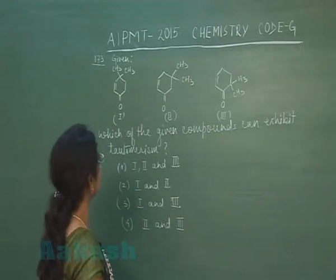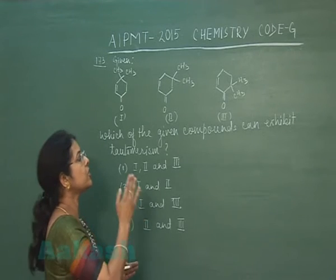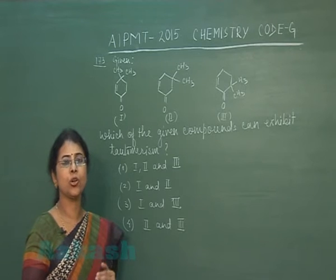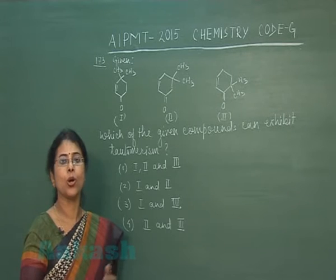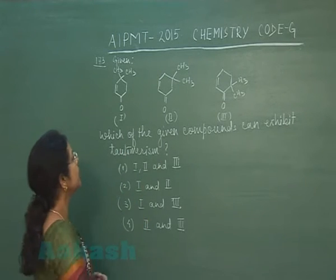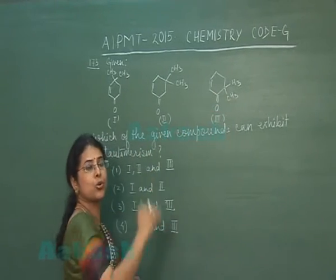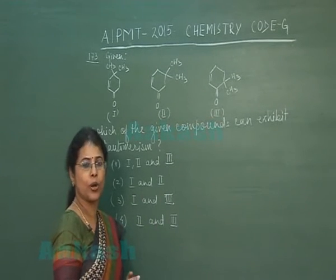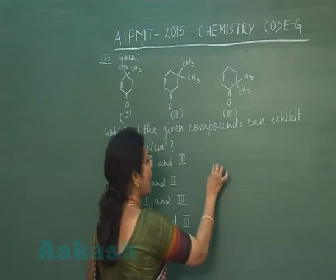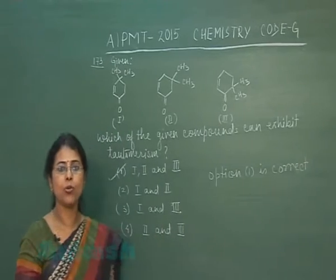Question number 173: Given 3 structures, which compounds can exhibit tautomerism? Tautomerism is shown by aldehydes or ketones having alpha hydrogen atoms, or where alpha hydrogen can be produced by other means. All three structures either have alpha hydrogen or can produce it by rearrangement of pi bonds. So all 3 structures can exhibit tautomerism, and option 1 is correct.